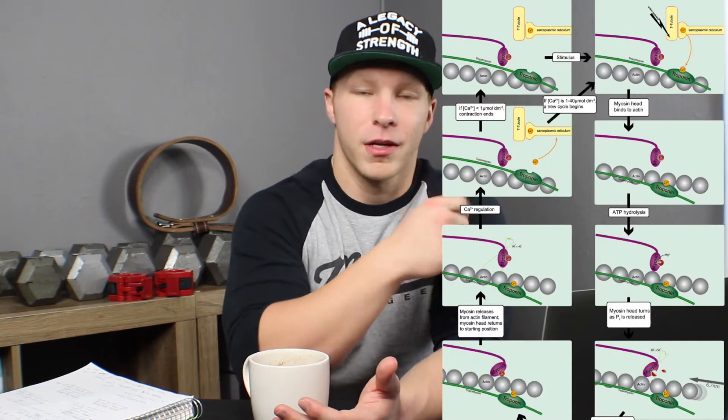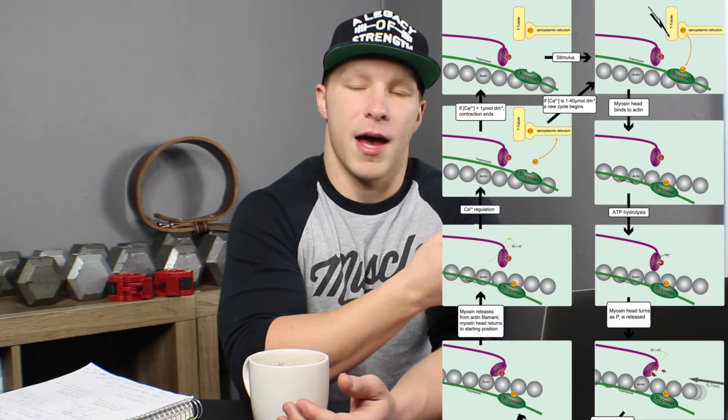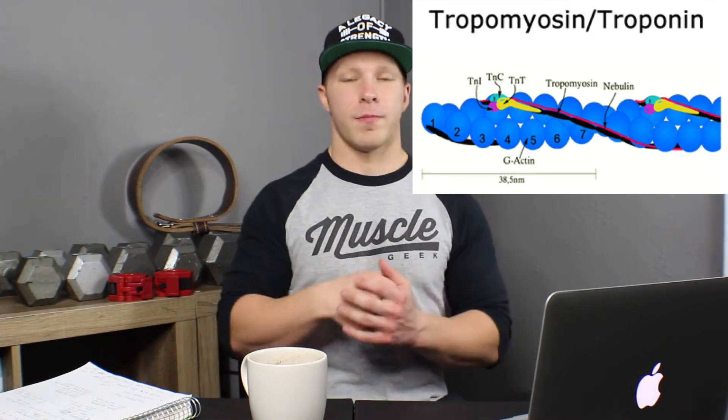Just look at this diagram right here. What's going to happen is that actin is going to slide across. When that slides, it's going to cause tension in the tropomyosin — see this little thing right here? That's the tropomyosin. When there's tension in that tropomyosin, it's going to cause tension in the tendon as well. Using the bicep as an example, the tendon being attached to the bone is going to cause the bone to move. That's what we're talking about when we talk about muscle force production.